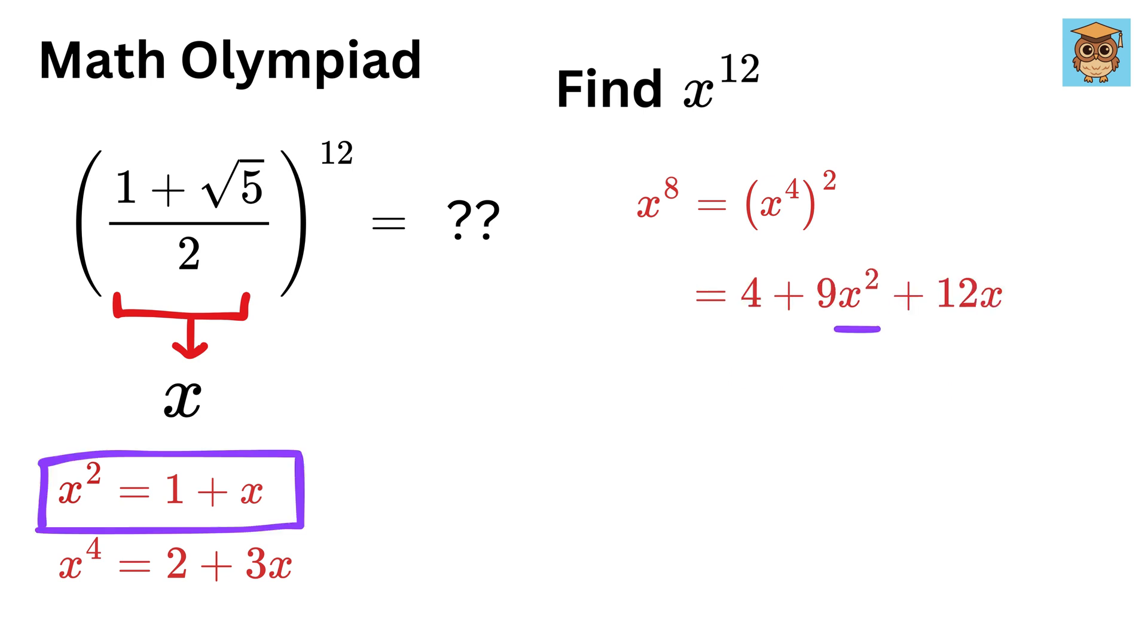Again write x² as 1+x, and we get 4+9(1+x)+12x. This will be 4+9+9x+12x, so x⁸ = 13+21x.